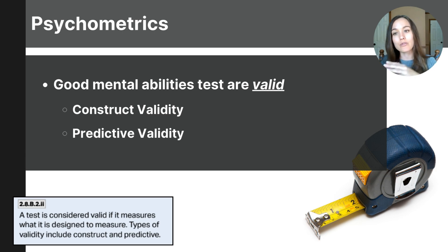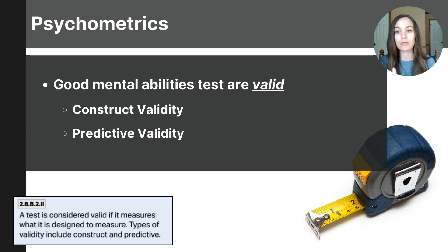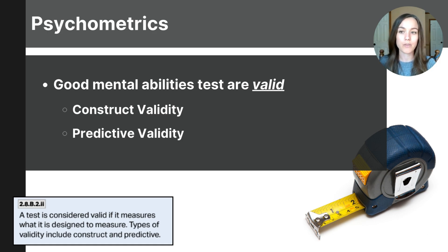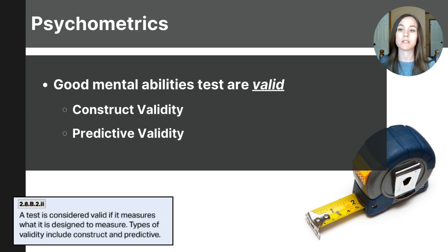When you measure each classmate, everyone measures one inch shorter than they really are. Your measurements would be reliable and consistent — individuals will get the same measurement every time — but your results would not be valid because they're not accurately reflecting true height. This highlights the difference between validity and reliability. Both are important concepts, but they're often easily confused. There are two types of validity you need to know. The first is construct validity, which determines whether a test truly measures the psychological construct it claims to measure, like intelligence.